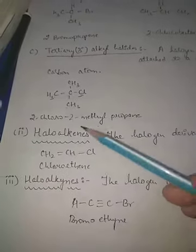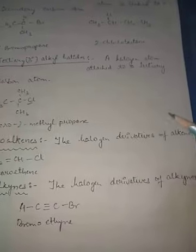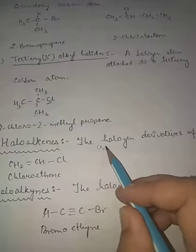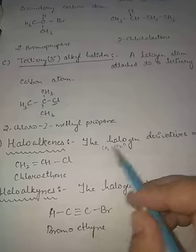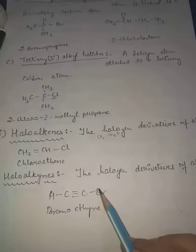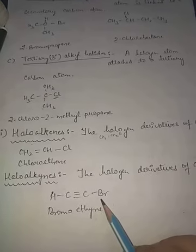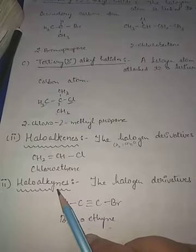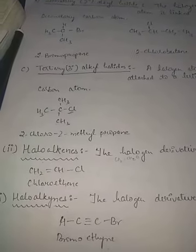Now, haloalkenes are the halogen derivatives of alkenes. For example, CH₂=CH₂ with one chlorine replacing a hydrogen gives chloroethene. Similarly, haloalkynes: if we have an alkyne and hydrogen is replaced by bromine, we get bromoethyne. This covers haloalkanes, haloalkenes, and haloalkynes.